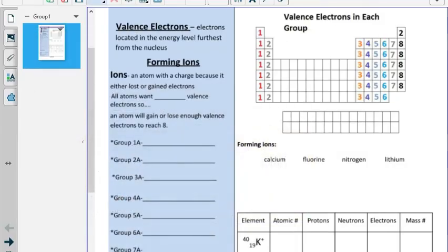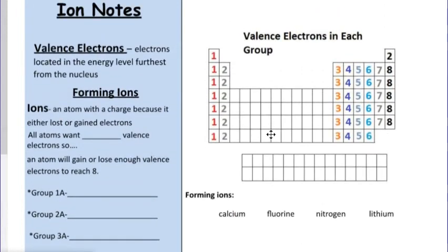If we remember that the group that the element is located in tells us how many electrons are in that outermost ring, that's a nice easy way for us to quickly get to that information without having to draw out this atom simulation every single time. There's an image on our page of notes for today called the ions notes that does a good job summarizing this. I'm going to ask that as we go through these notes, you want your green periodic table out because we're going to be adding specific information above the groups.